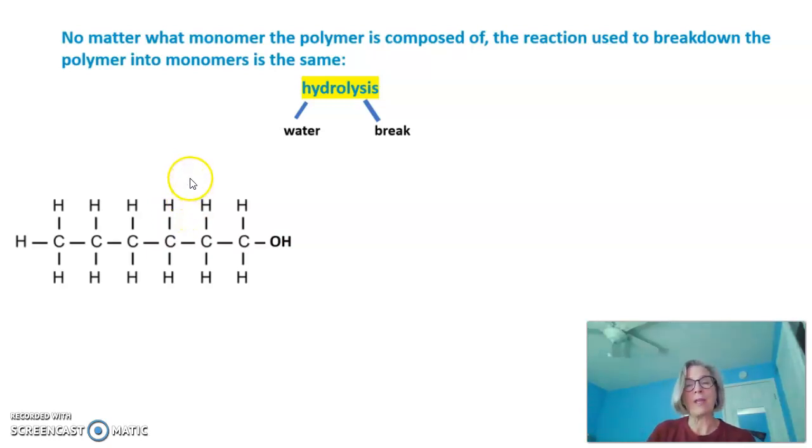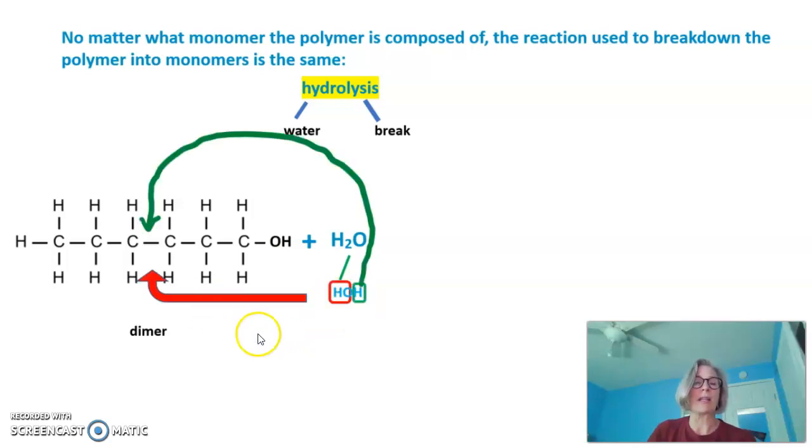Let's look at our dimer that we produced in the previous reaction. If we add water, water can be thought of as both a hydrogen and a hydroxyl. So the hydroxyl and the hydrogen can be used to break the bond between the two monomers in the dimer.